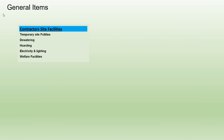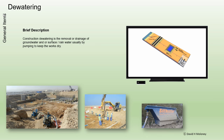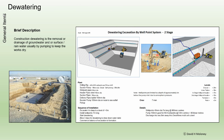Contractor's Site Facilities comprise offices, canteens, toilets, drying rooms, stores, plant yard, generators, and workshops.